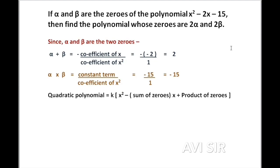Here k is a non-zero constant. For example, x squared plus 5x plus 6 has zeros minus 2 and minus 3. If we multiply by 2, we get 2x squared plus 10x plus 12, or by 3 we get 3x squared plus 15x plus 18 — all having the same zeros. That is why we apply k. The standard form is the main quadratic polynomial and k represents any non-zero real number.